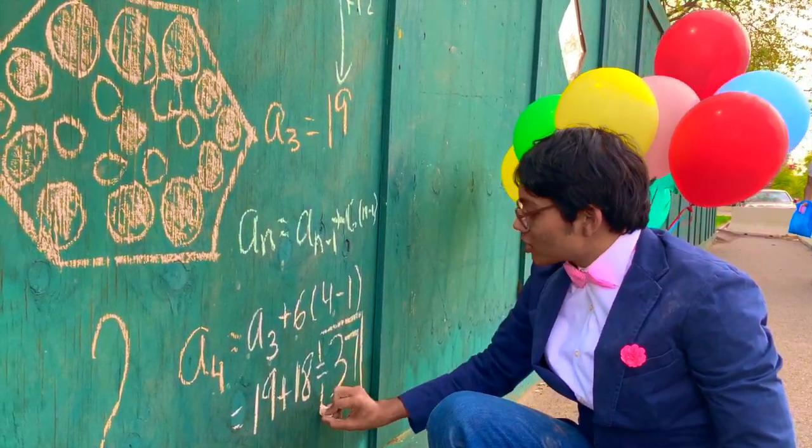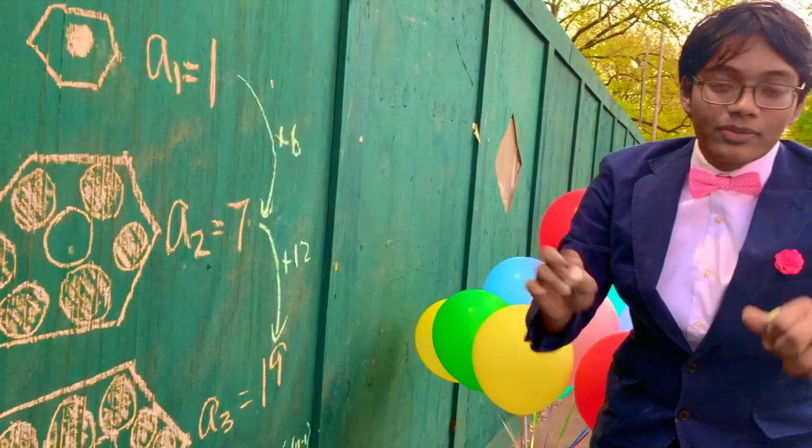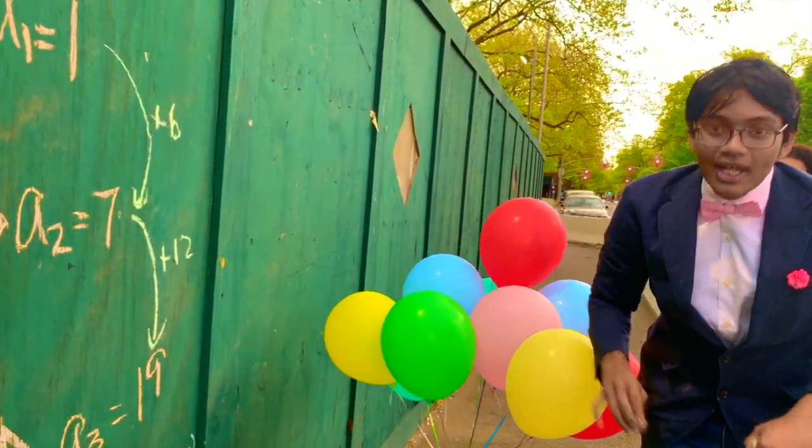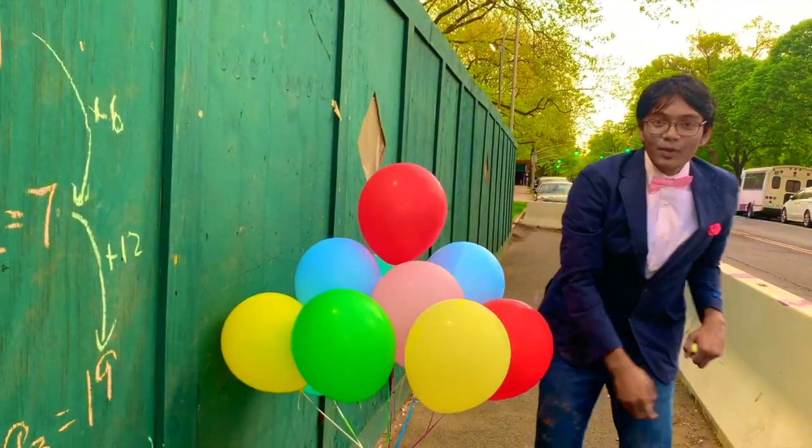And that, ladies and gentlemen, is the answer. Thanks for watching this episode of Maths for Bronson and Arithmetic Sequences. Next time we're going to be checking out Arian Perimeter and sponsored by Brilliant.org.